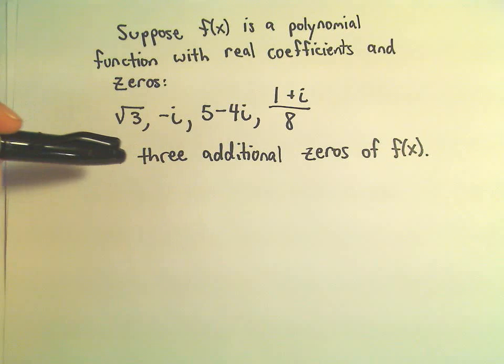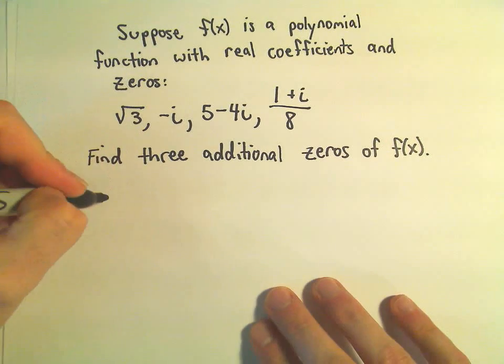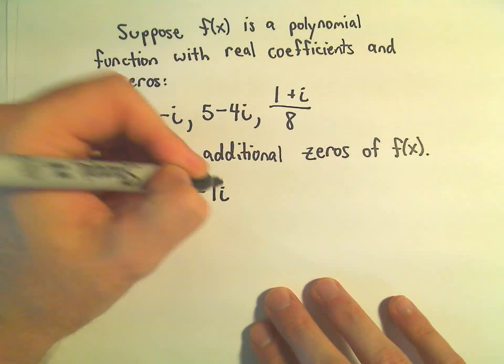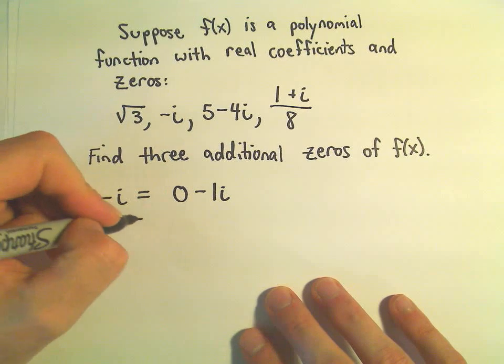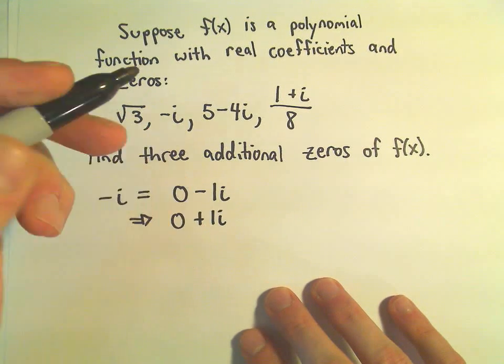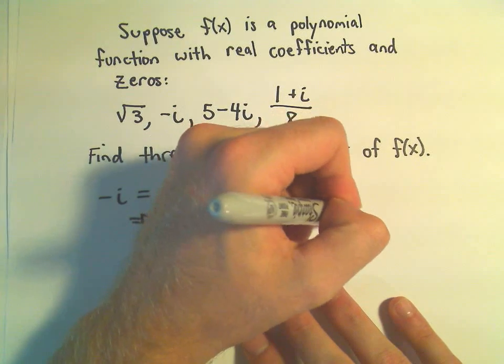and we want to know what three other zeros would be. Well, we can write negative i as a complex number by writing it as 0 minus 1i. And since 0 minus 1i is a zero, that would imply that 0 plus 1i, which just equals positive i, is also a zero.